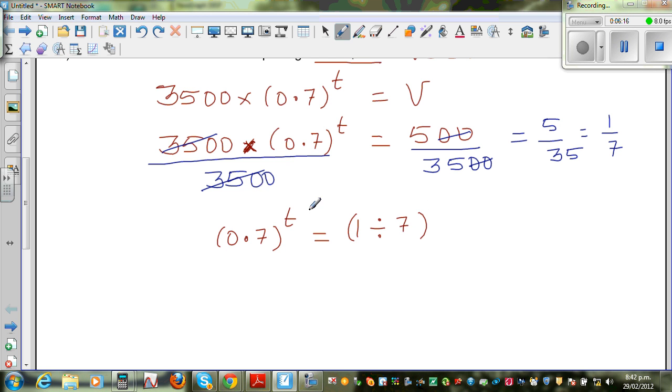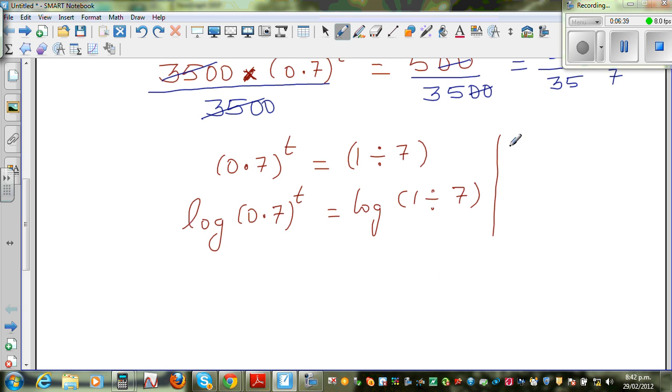So here, now there's a rule like this. Let me write the rule. log(x^n) = n·log(x). So the rule says, if you have a power, it drops down. So it becomes n·log(x). So here the power is t, so this will drop down. So I can say t·log(0.7) = log(1/7).